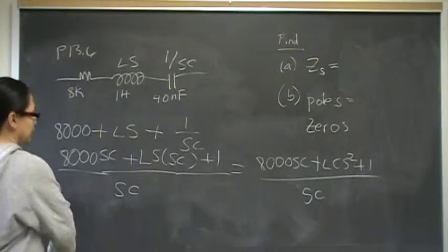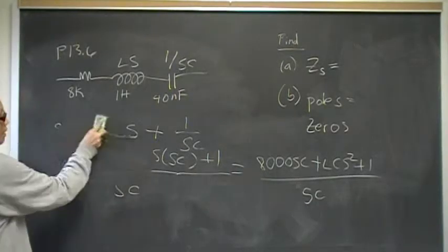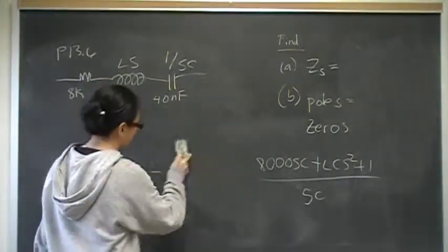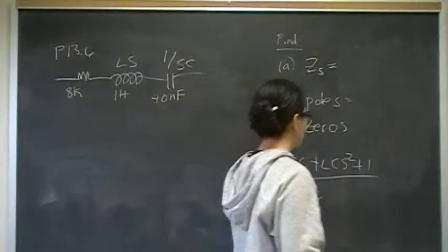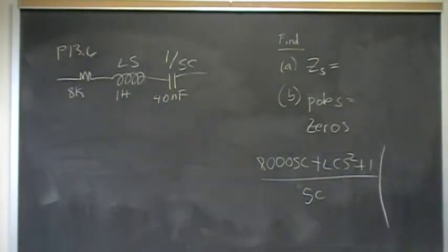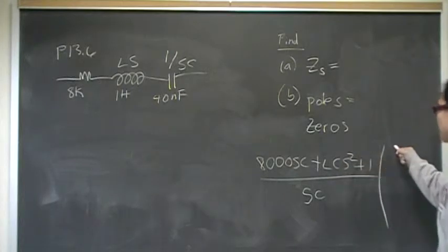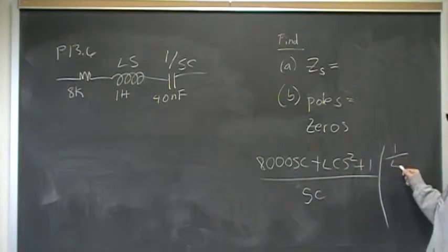Now, we always want to get the S squared to be a 1 coefficient. Just automatically do that, because you will always end up doing inverse Laplace transforms. And when you do that, everything is based on the coefficient 1. So, divide top and multiply top and bottom by 1 over Lc.